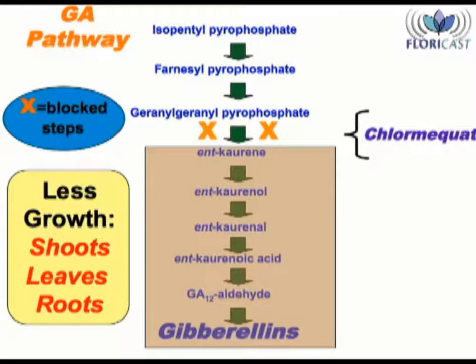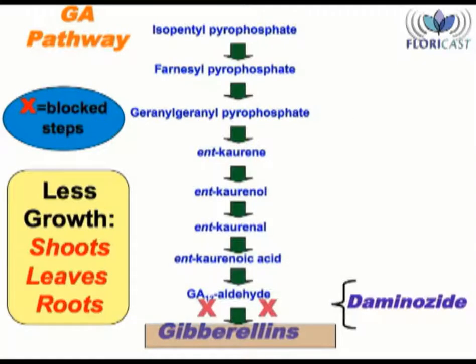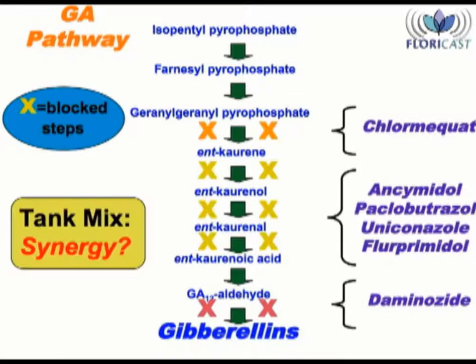Chlormequat also blocks the pathway, but it occurs further upstream — that's the reason why it's classified in Group A. Daminozide blocks the pathway further downstream, and that's why it's classified in Group C. So with these three groups of chemicals, they each control growth at a different point.